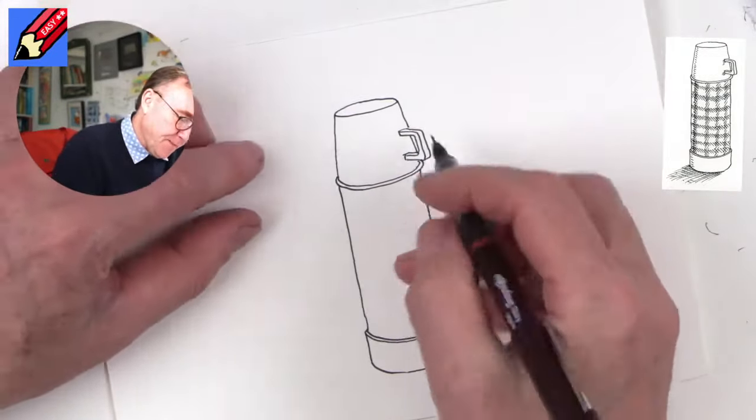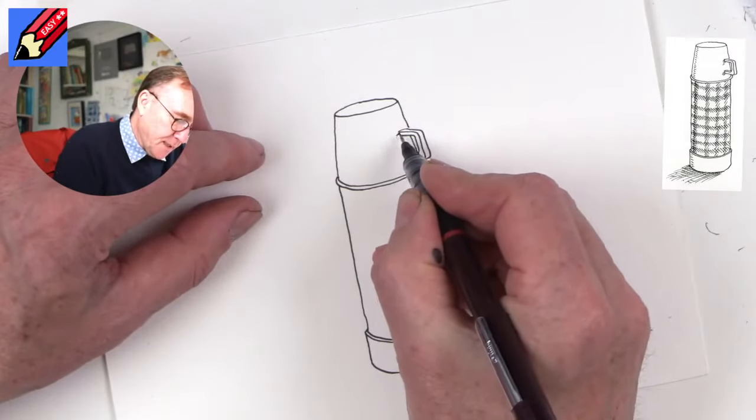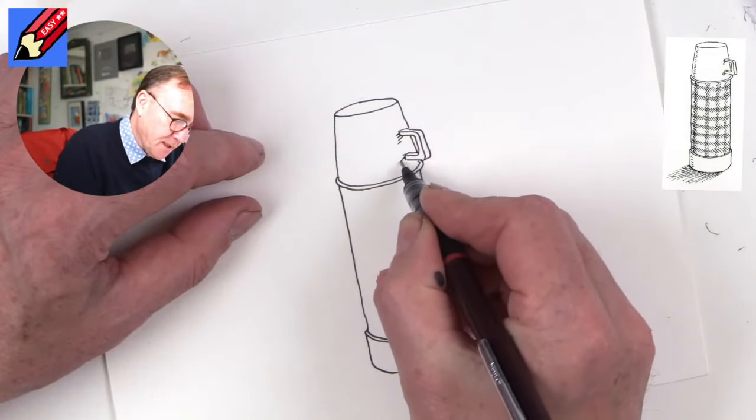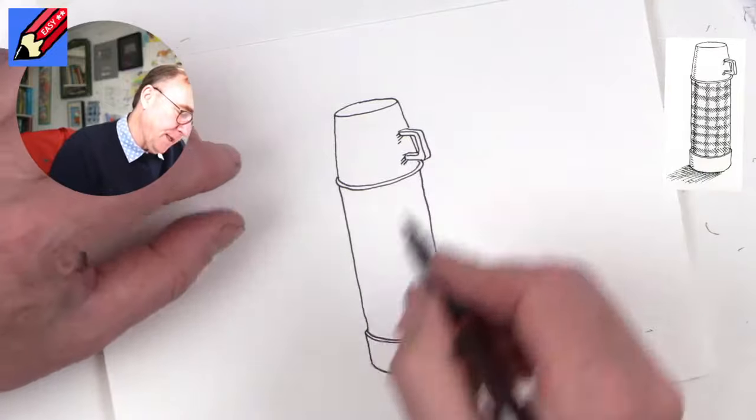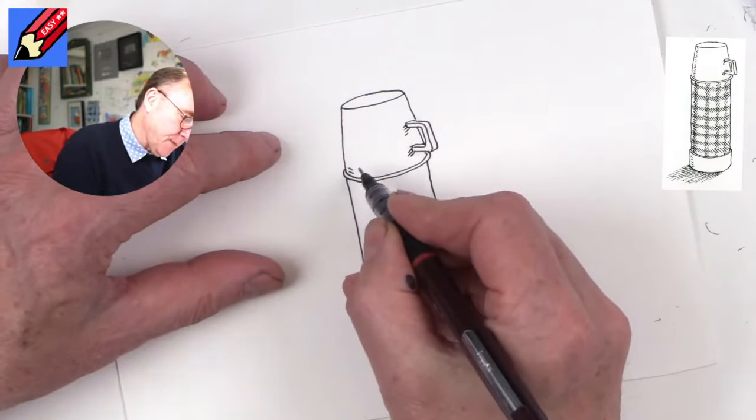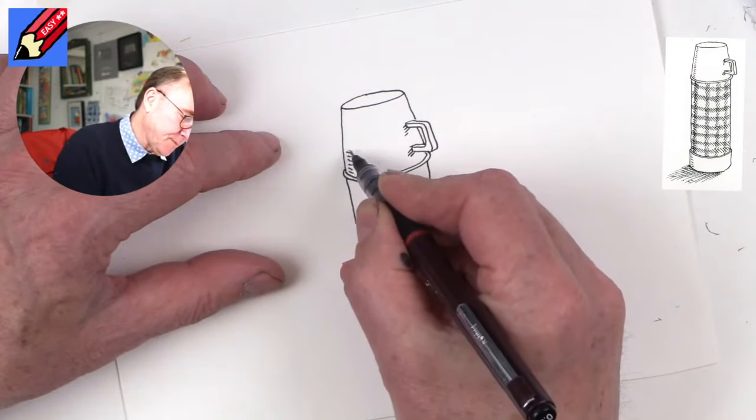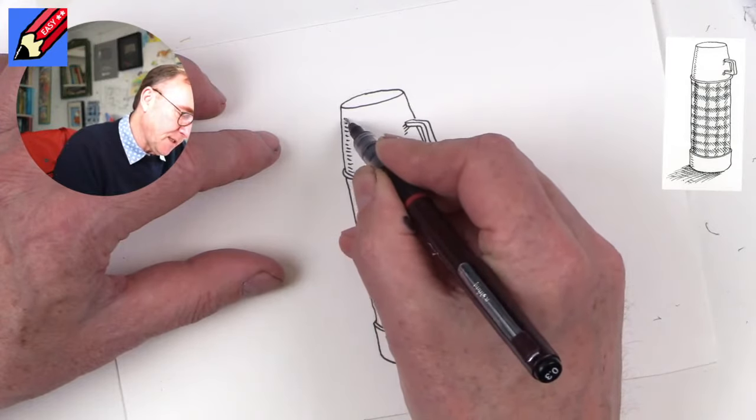We're going to do some very simple shading here. So I just did a little bit of shading there, like that, just a little bit of hatching down the side there to give that a little bit of a curve to it.